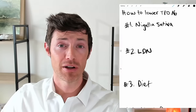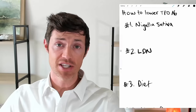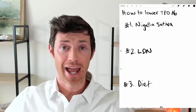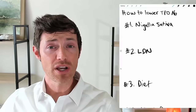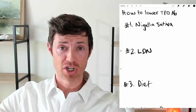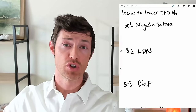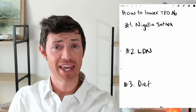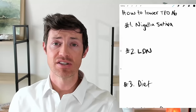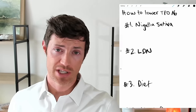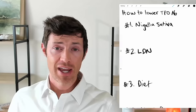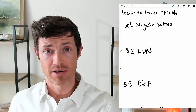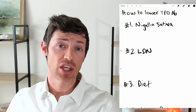Now, before we talk about the six treatments we're going to be discussing here, I want to tell you two things to keep in mind. Number one: as a thyroid patient, I think the best route is to shoot for zero thyroid antibodies. But this is a big caveat — if you can't get to zero thyroid antibodies, I don't want you to stress about it. Elevated thyroid antibodies increase your risk of developing hypothyroidism; however, they do not guarantee that you will develop it.